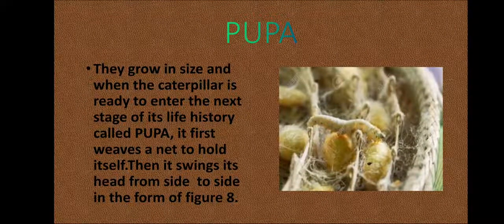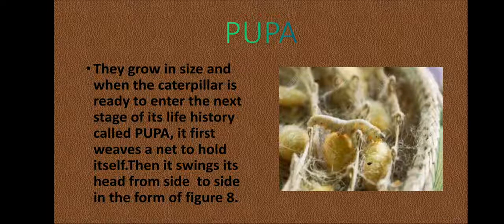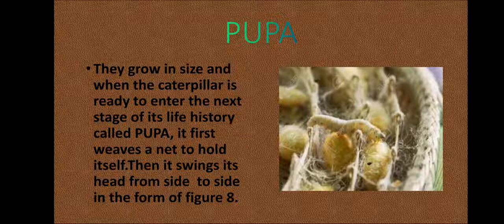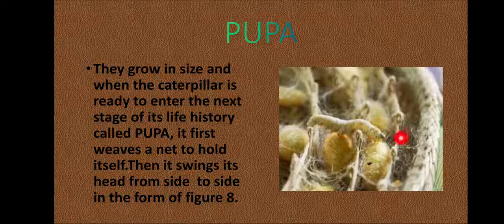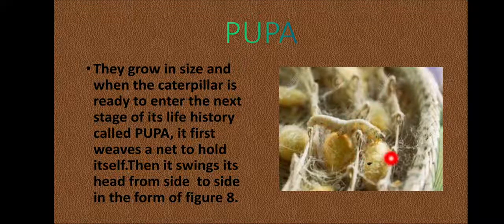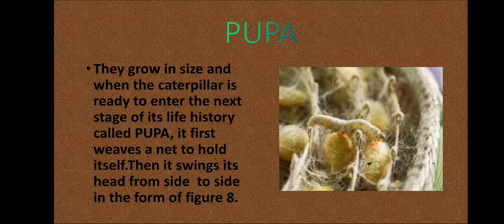After the larvae or caterpillars hatch, they grow in size. When the caterpillar is ready to enter the next stage of its life history, called pupa, it first weaves a net to hold itself. As you can see in the image, very fine fibers are released by the caterpillar around its body so that it can hold its body within this net.